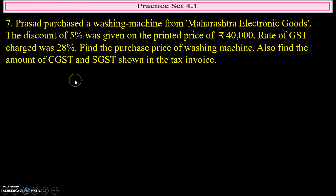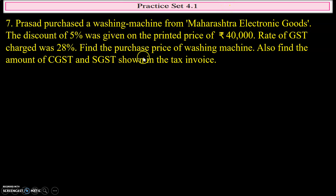For example, if you buy any object for ₹100 and you pay a tax of ₹10, the purchase price will be ₹110. Purchase price means the price including the GST. Also, GST is always charged on the discounted price — never on the printed price.